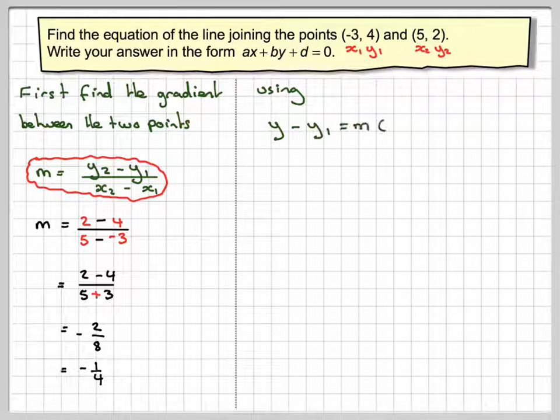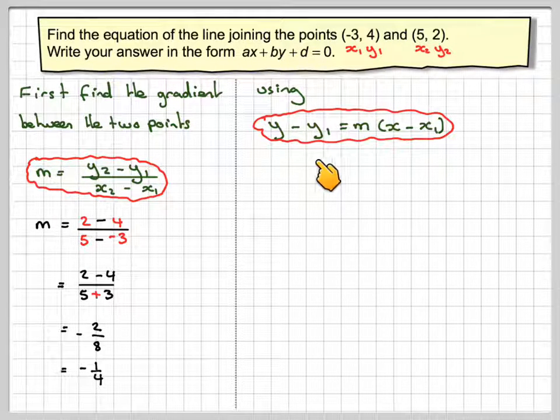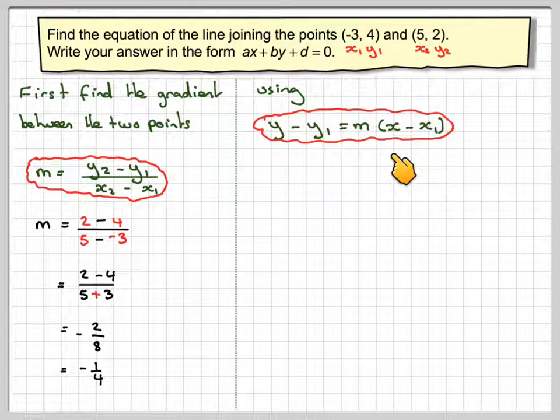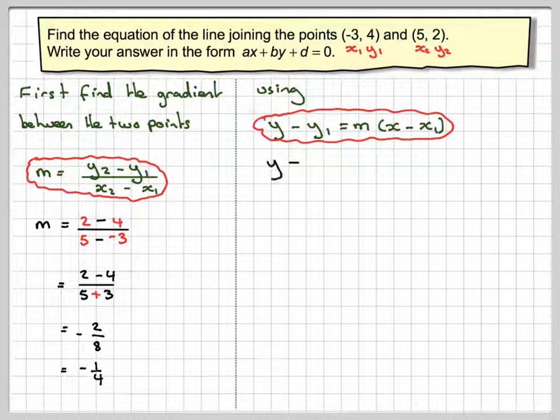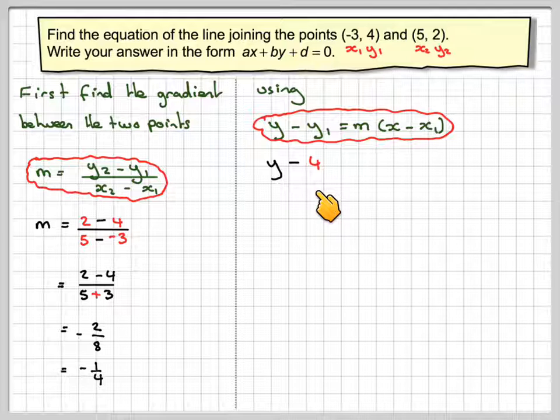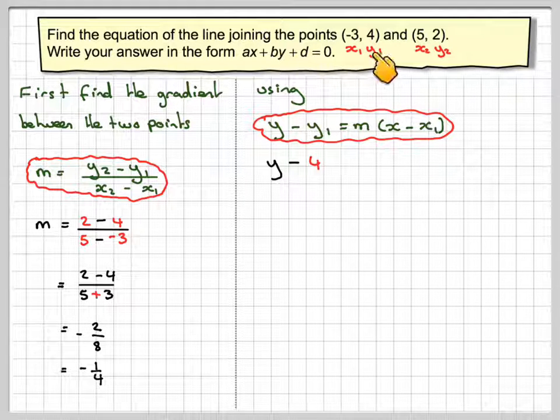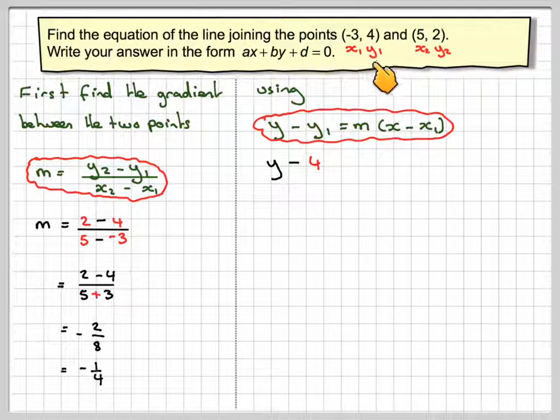In order to find the equation, we just go ahead and use y - y1 = m(x - x1). We've got y minus 4, so we'll just use these coordinates here. You could use these as well if you wanted to, but you just need to use one set of coordinates.